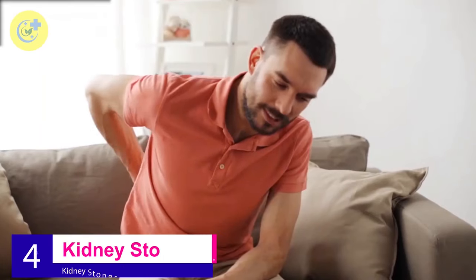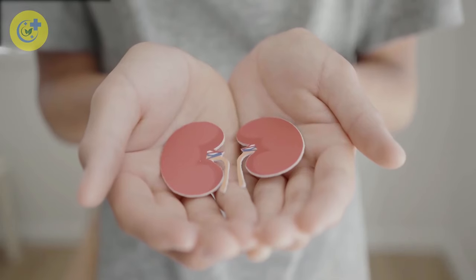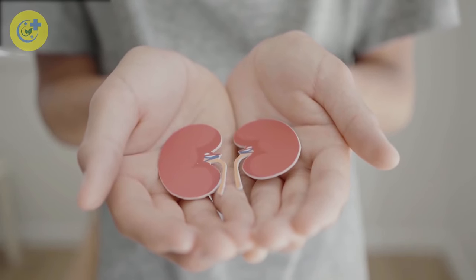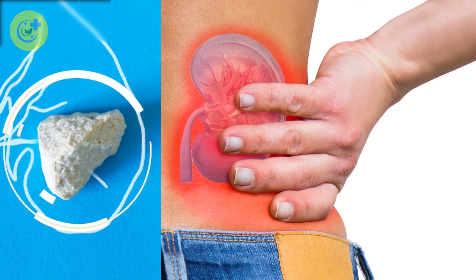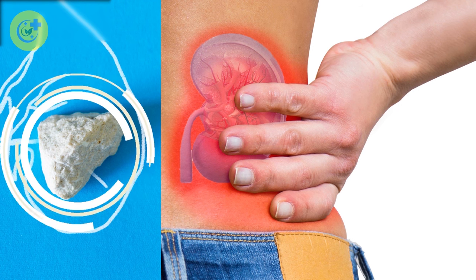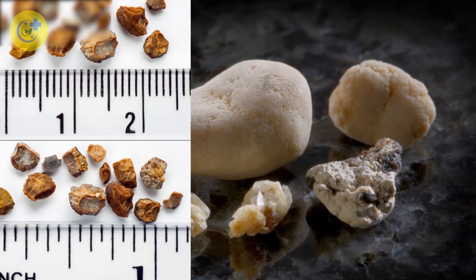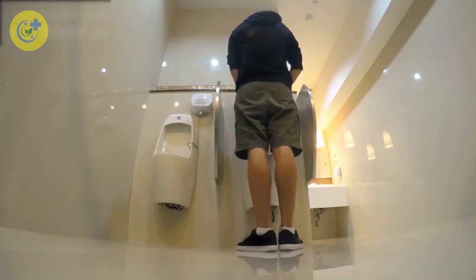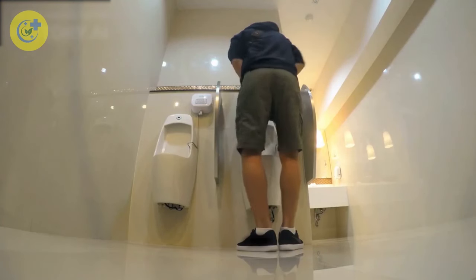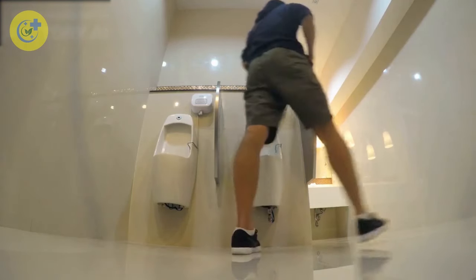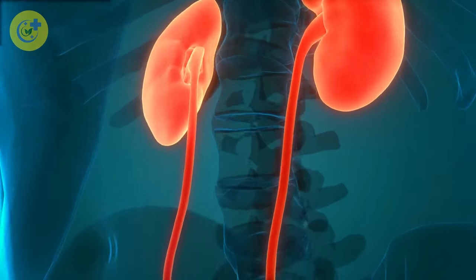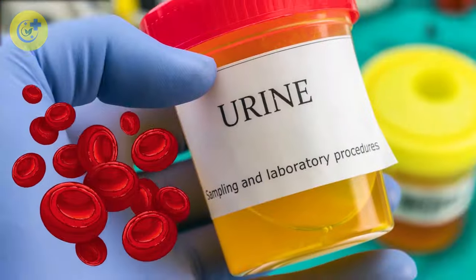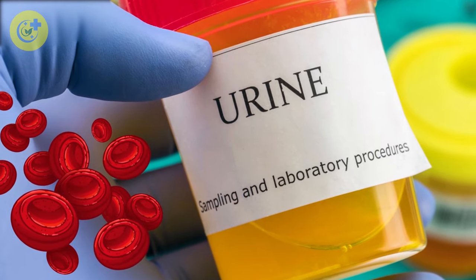Number 4: Kidney stones. Kidney stones are one of many causes of pus cells in urine. Kidney stones, or urolithiases, occur when substances such as calcium, phosphorus, and other minerals combine together and form a small rock-like material. Most kidney stones pass out through urination without any problem. However, if they cause irritation to your kidneys or urinary tract, there could be blood and pus cells within your urine.